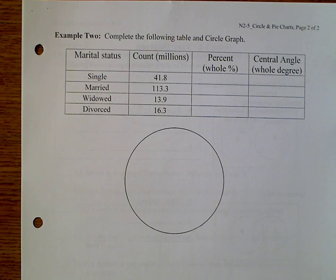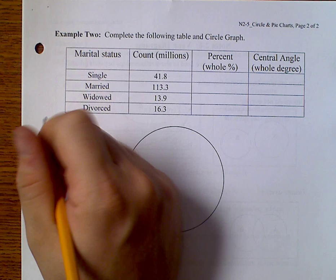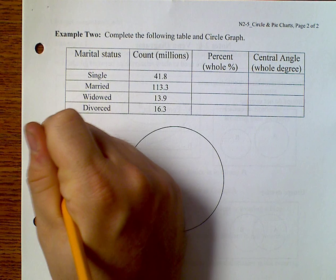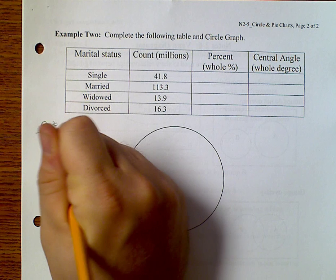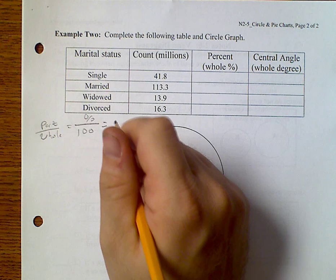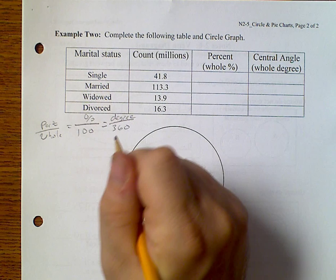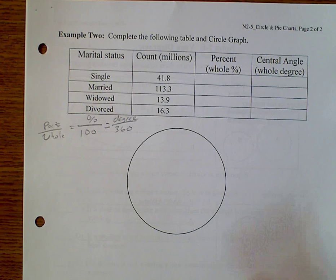Let's go ahead and take a look at another example. Someone has gone out and counted all of our single, married, widowed, and divorced, and said how many millions of people that we have. And we need to convert these into percents and angles. Well remember our formula is that part over whole equals the percent over 100 equals the degree over 360.